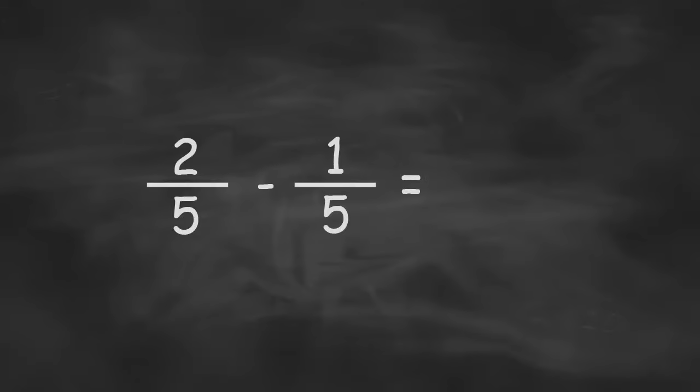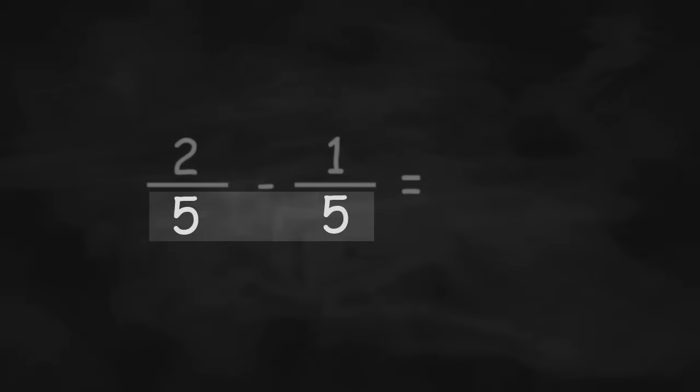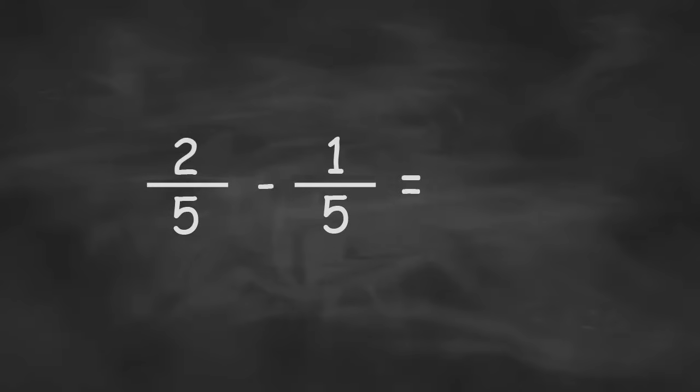An easy example is when the denominators of the two numbers you're subtracting are the same. Like this example, we have 2 fifths minus 1 fifth. Since the denominators, the number on the bottom, is the same, we can just subtract the two top numbers, keeping the denominator the same. So 2 fifths minus 1 fifth gives us 1 fifth.